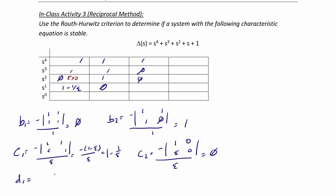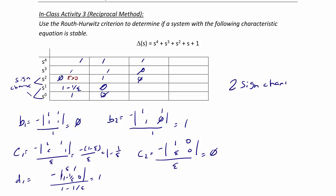Then we do D1. D1 is equal to negative epsilon times 0 minus (1 minus 1 over epsilon) times 1, divided by (1 minus 1 over epsilon), which equals 1, so we put a 1 here and pad that row with a 0. Now let's evaluate: we have 1, 1. If epsilon is greater than 0, that's still 1 — no sign change so far. If epsilon is a small positive number, C1 becomes negative, so we do have a sign change there. And because C1 is negative and the last row D1 is positive, we're also going to have a sign change there. So we have two sign changes, which means we have two poles in the right half plane and two poles in the open left half plane. Once again, we have an unstable system.